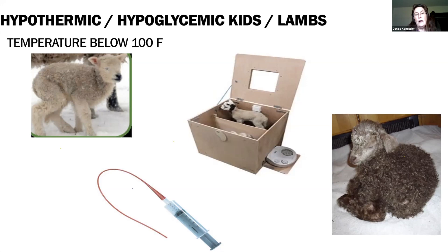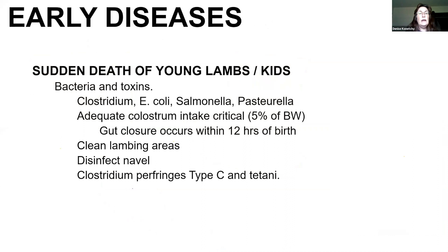If they are not able to suck, tube them with some type of energy source. If they are comatose and not able to swallow, you need to be trained on how to give an intraperitoneal shot of 50% dextrose — something easily taught by your veterinarian. Remember: get that energy source into them first and then warm them up. There's a little warming box shown on the slide. A five-gallon bucket filled with warm water, put the lamb or kid in a garbage sack and set them in that water — that's one way we do things at the sheep center and it works really very effectively.